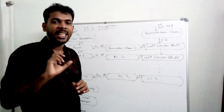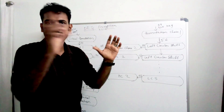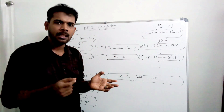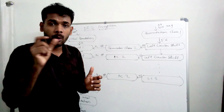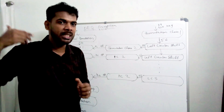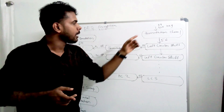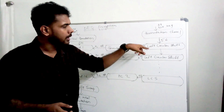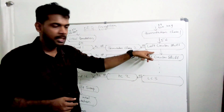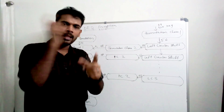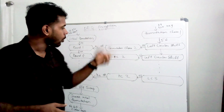For key generation, we start with a 64-bit key. One permutation — permutation choice 1 (PC1) — reduces it to 56 bits by eliminating the parity bits.